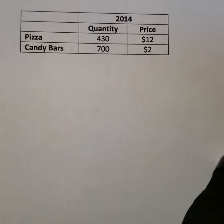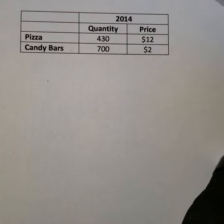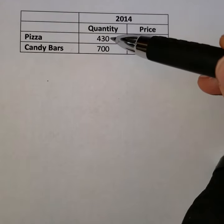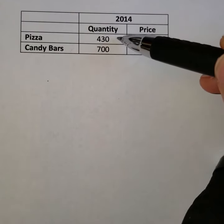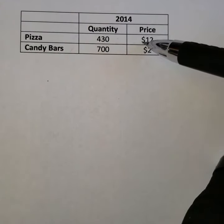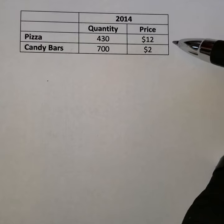When calculating our CPI, the first thing we have to do is calculate the cost of the market basket. To do that, we take the quantity times the price for each year and then sum them.